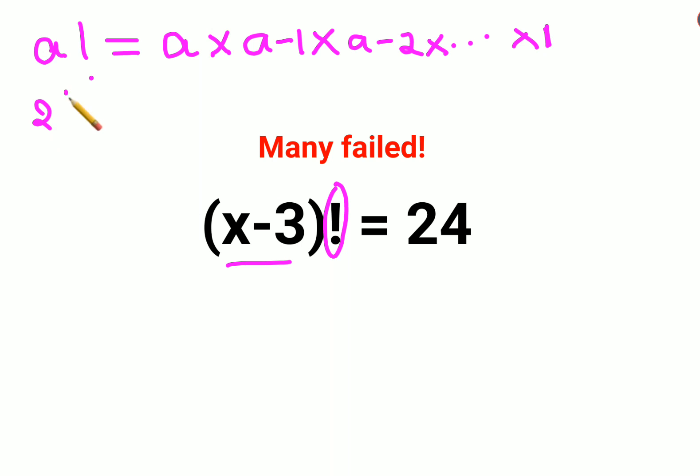So basically, 2 factorial will be 2 into 1. 3 factorial will be 3 into 2 into 1. Similarly, 4 factorial will be 4 into 3 into 2 into 1.